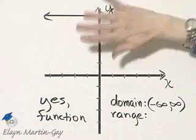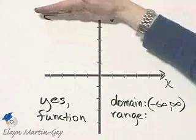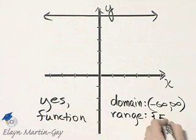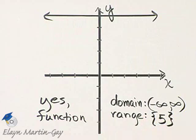And how far down and how far up does this graph go? Well, it doesn't go further up or down at all. It stays at 5. So the range is simply the y value of 5.